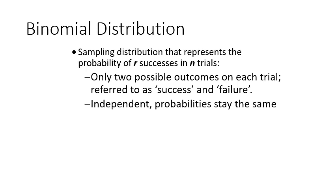The binomial distribution is a way to look at the probability of exactly a certain number of successes — a specific number of successes in N trials. So in that example, what's the probability of rolling exactly one on three die rolls? Well, the number of successes is one and the number of trials is three.